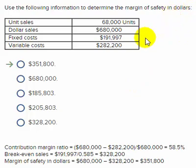Our current sales are $680,000, so we have half of it already. All we need to do now is figure out the break-even sales — that is, break-even in sales dollars.